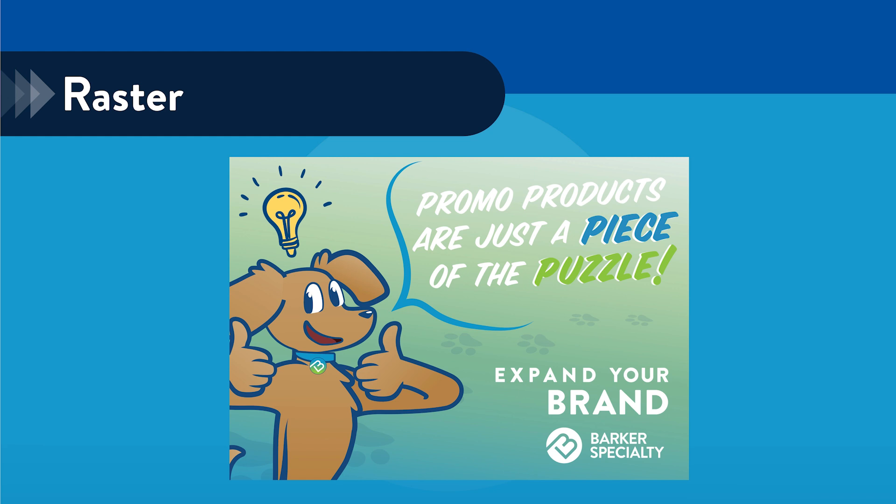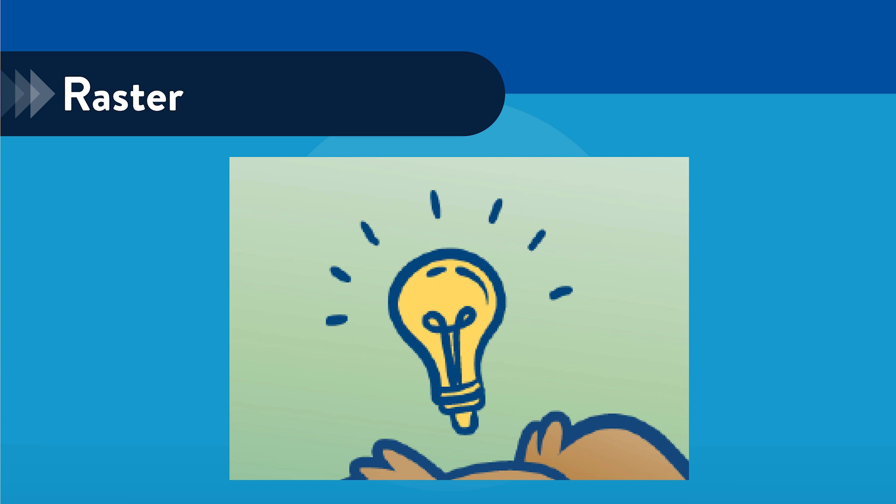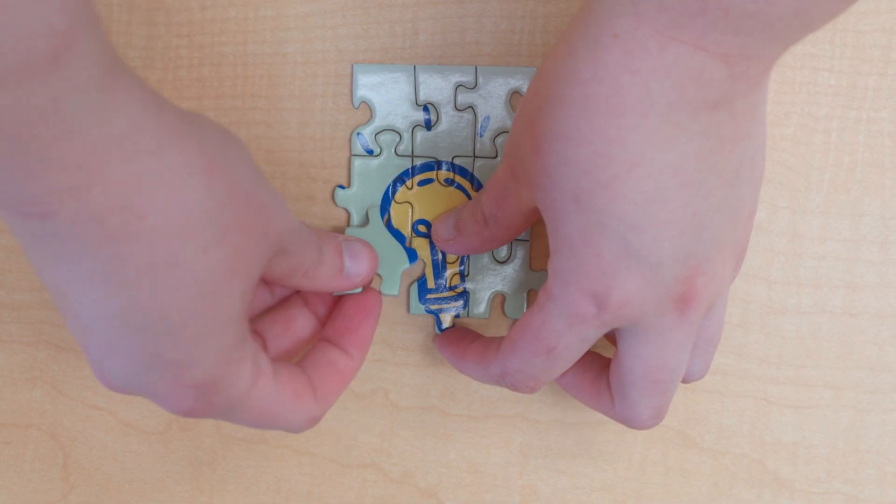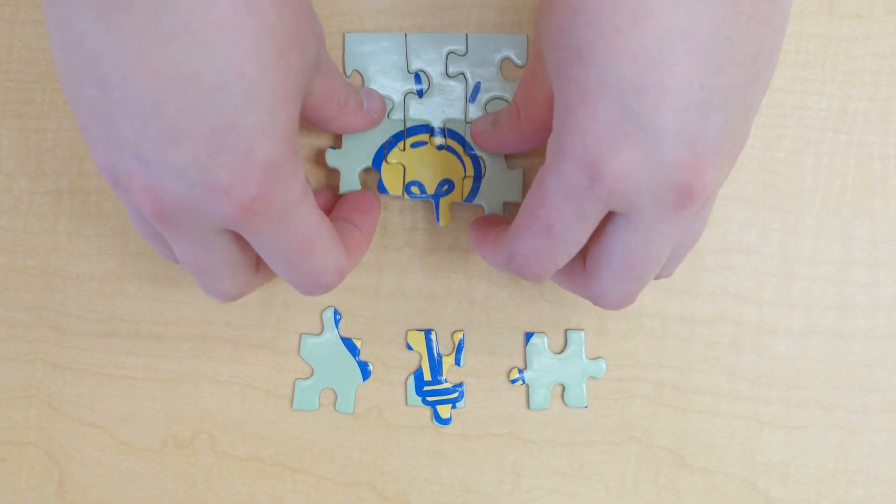However, there's a catch. When you enlarge a raster image, it can become pixelated or blurry because you're stretching those individual pixels. For example, imagine zooming in on a digital photo. At some point, you'll start to see the individual squares of color. That's pixelation, and it's a common issue with raster images.